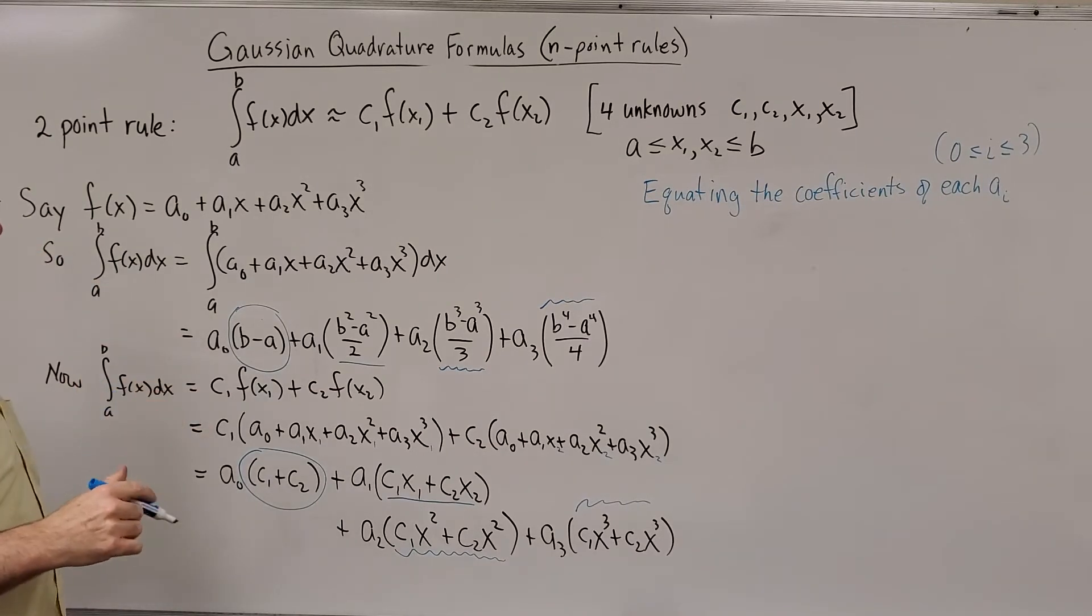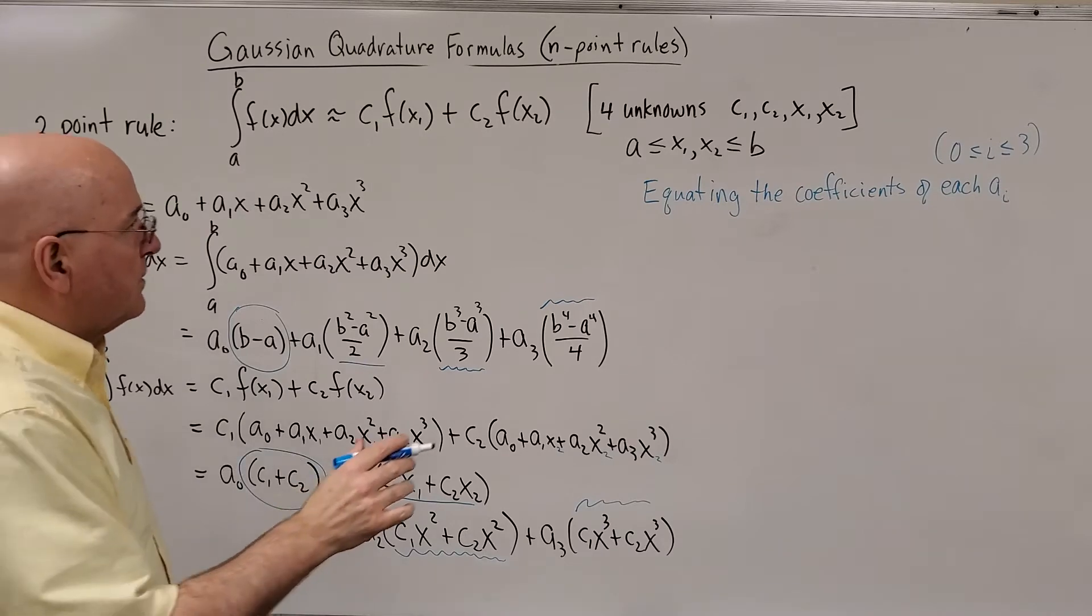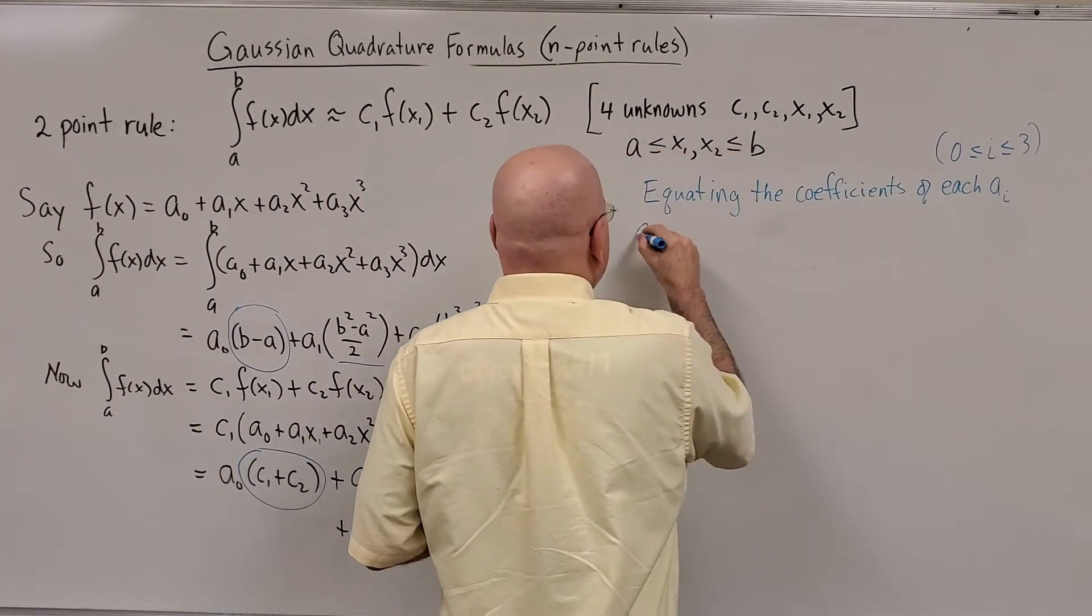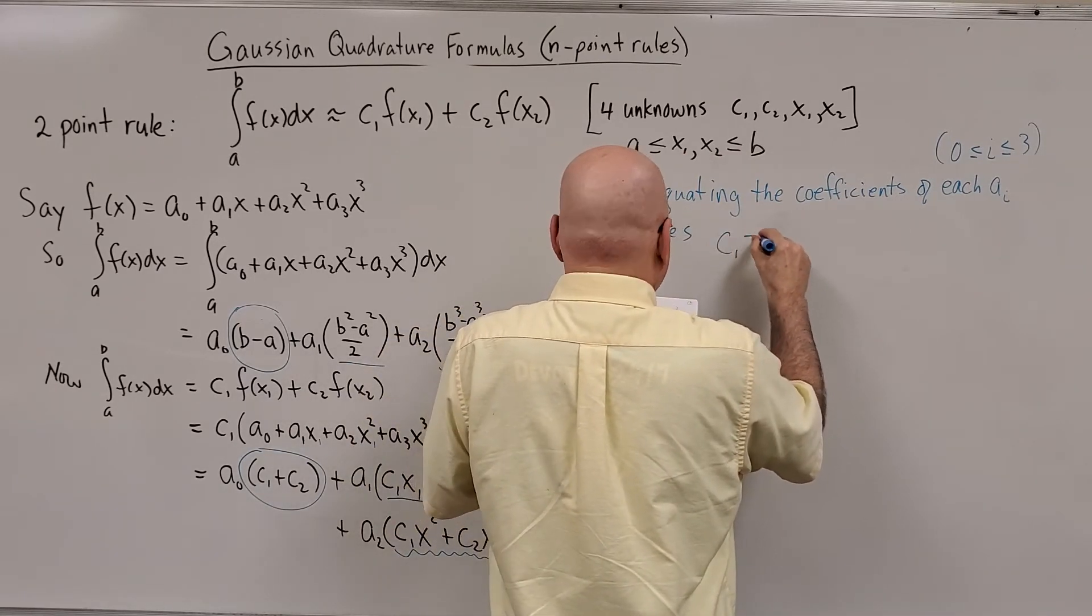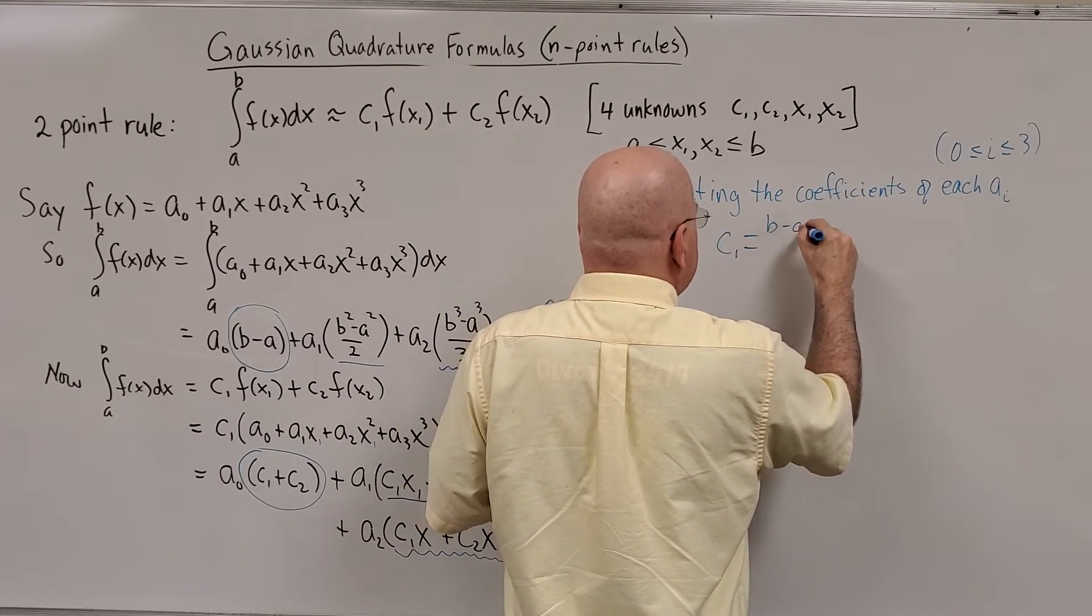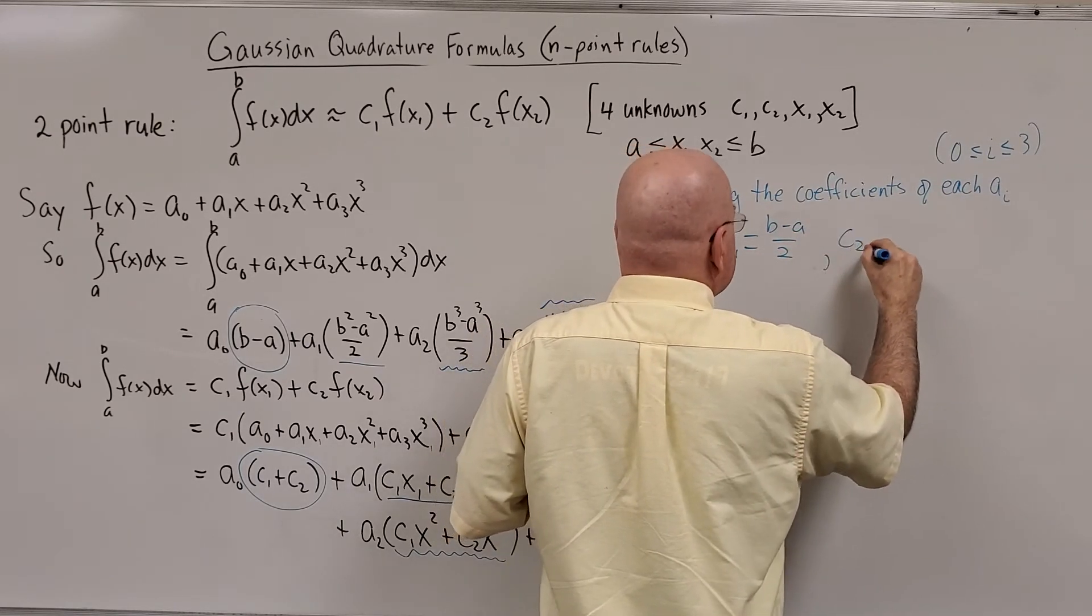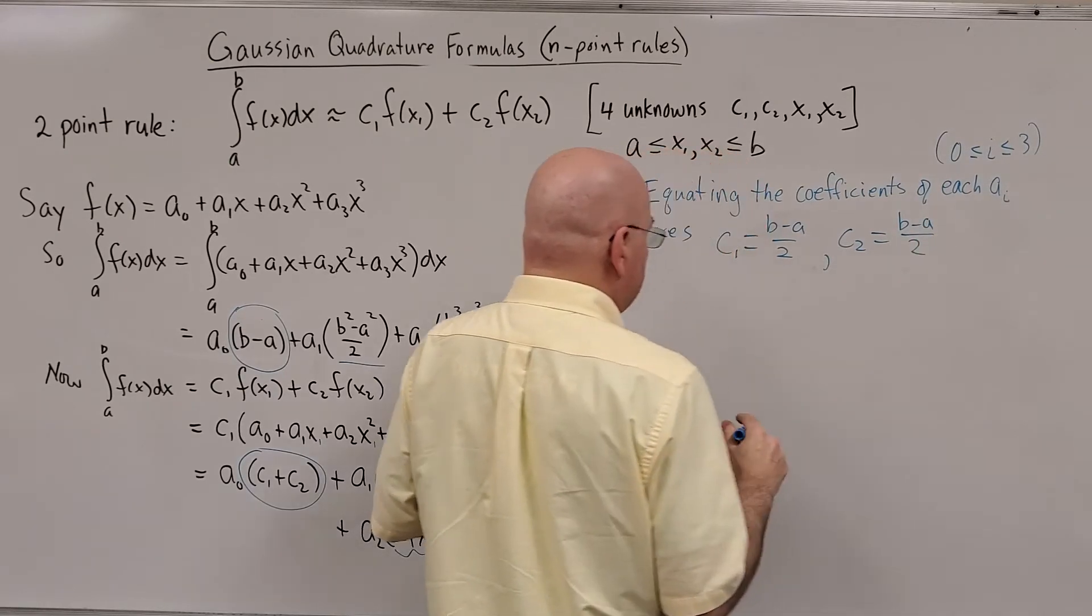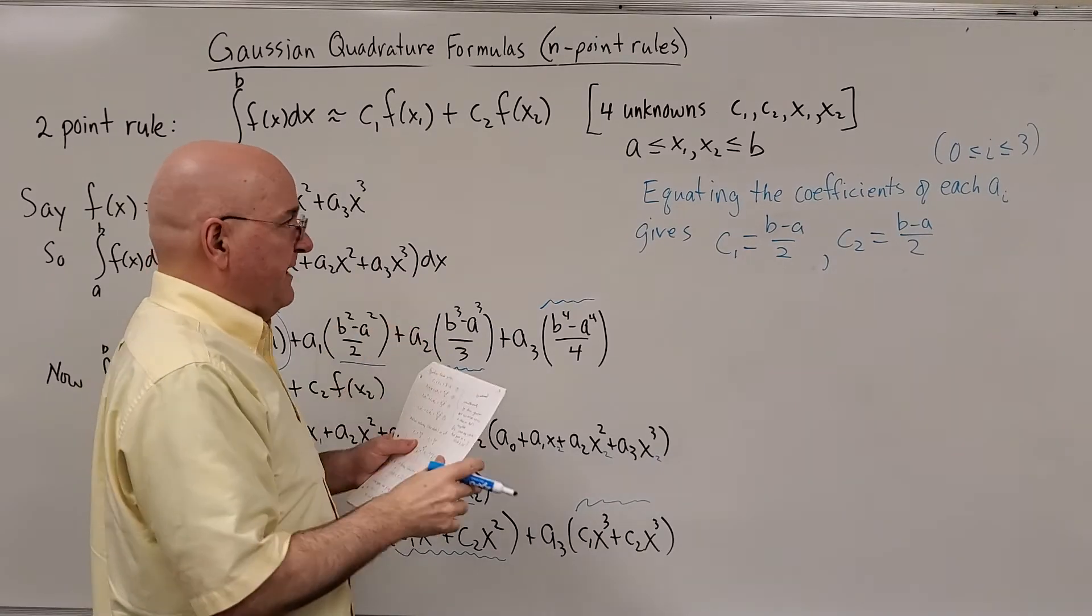And if you equate the coefficients, and I'm not going to write it out and do all of the linear algebra, equating the coefficients gives the following. C1 is equal to B minus A over two. And C2 as well. C1 and C2 are half of the interval width, each one of them.